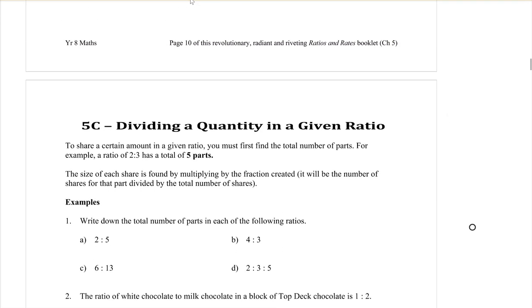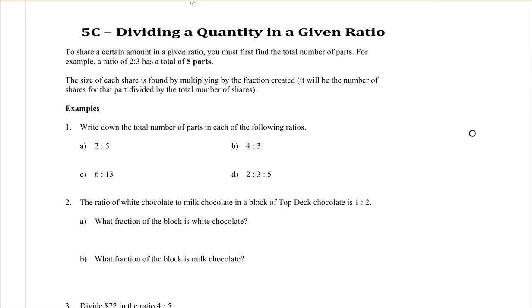Okay, so on page 11, section 5C, we are dividing a quantity by a given ratio. Today, to share an amount in a ratio, first of all you need to know how many parts or the total number of parts in your ratio. For example, if I have the ratio 2 to 3, written up here on the top of the page, I add those two numbers together: 2 plus 3 makes 5 parts in that ratio.